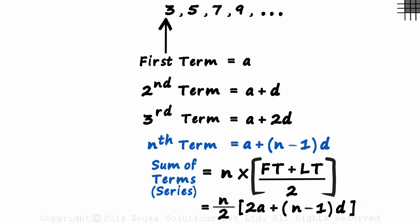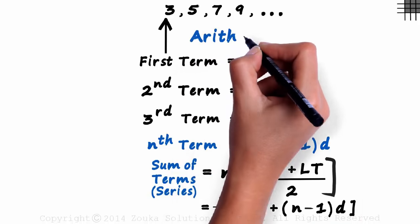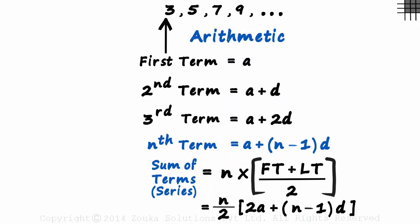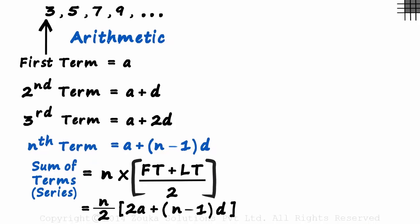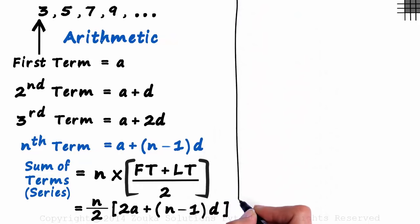But wait, this is only an arithmetic sequence. Yes, this is an arithmetic sequence, as the difference between two consecutive terms is constant. But wait, what are the other types of sequences then? To look at more types, we go through the next sequence.